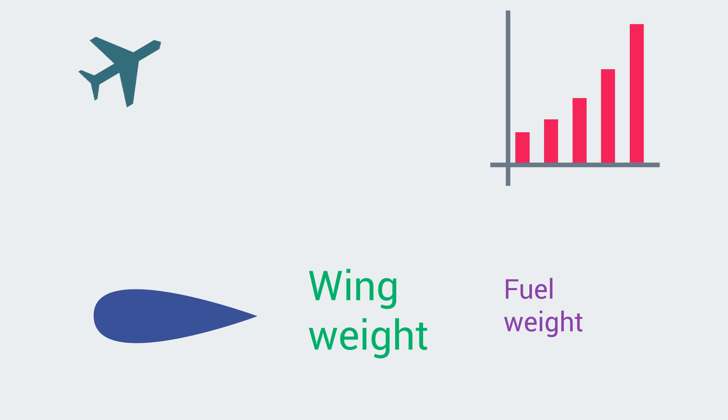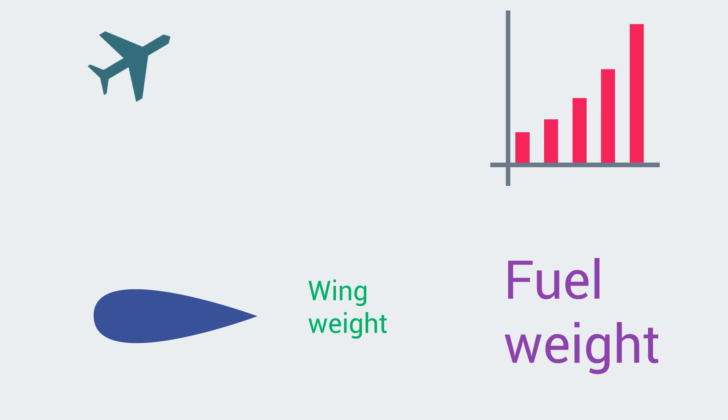This algorithm is used to improve a variety of things, from fuel efficiency in airplanes to trading strategies. For example, with airplanes, evolutionary algorithm optimizes the shape, minimizes wing weight and maximizes fuel weight to improve the overall efficiency of the airplane.